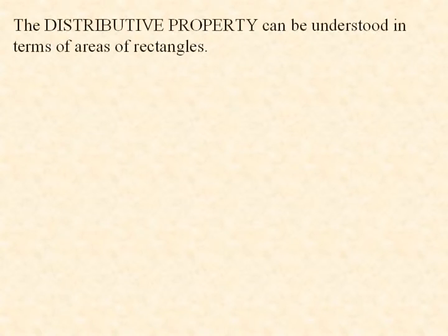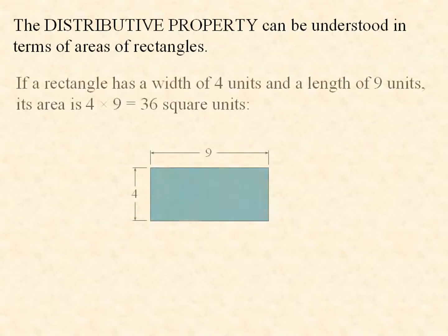The distributive property can be understood in terms of areas of rectangles. If a rectangle has a width of 4 units and a length of 9 units, its area is 4 times 9, or 36 square units. This means you can fit 36 little square units inside the rectangle.